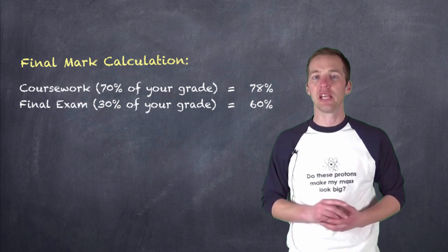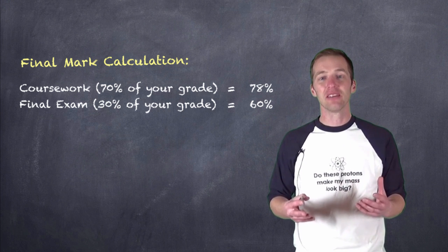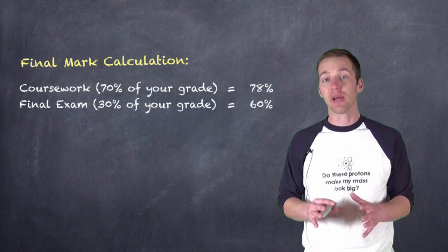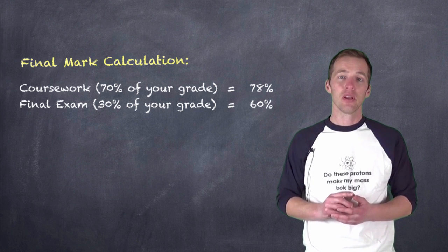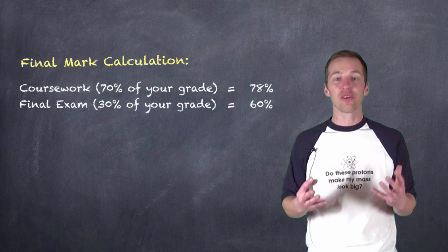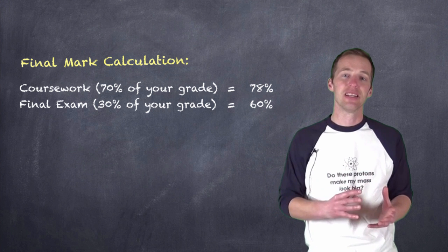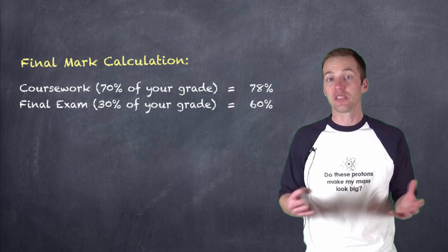Now, if they achieve a 78% in the coursework throughout the year, and they have an off day, hey, it happens, on the final exam and get a 60%. One would expect that, given the 70 and 30% weightings, that the mark should be closer to 78% than it is 60. And that's a reasonable assumption.